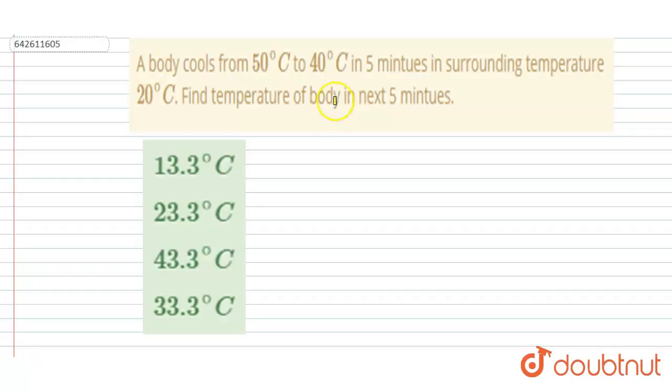50 degrees Celsius to 40 degrees Celsius in five minutes in a surrounding temperature of 20°C. Find the temperature of the body in the next five minutes.